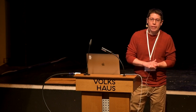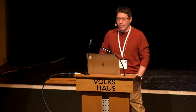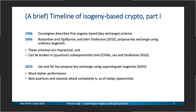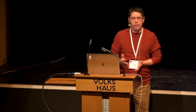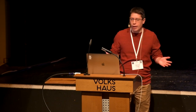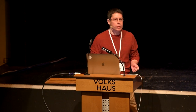Before getting into the technical details, let me give you a very quick timeline of the development of isogeny-based crypto. It all began in 1996 when Couveignes described the first isogeny key exchange scheme. Years later, in 2006, after a series of papers by Rostovtsev and Stolbunov, we had a key exchange using ordinary isogeny. But the problem with all these schemes was that they were terribly expensive and impractical.